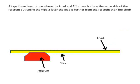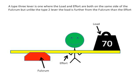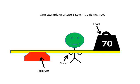A type 3 lever, where the load and effort are still both on the same side like the type 2, but the load is further from the fulcrum than the effort. One example of a type 3 lever is a fishing rod.